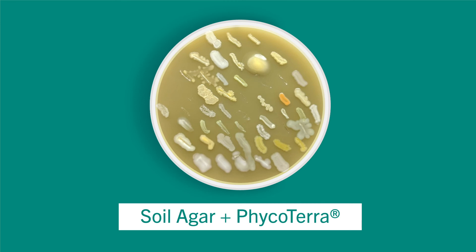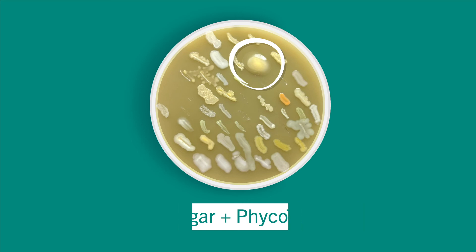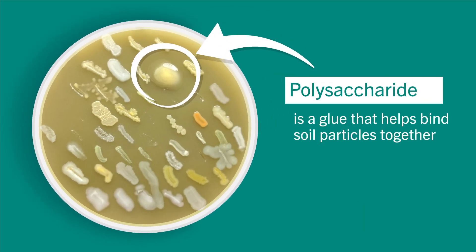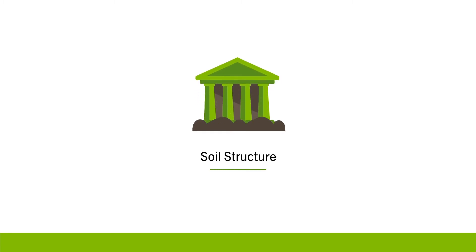One thing to notice is the appearance of this egg-yolk-looking substance in the top center. That is a polysaccharide — a glue that helps bind your soil particles together. So when you get a really optimal bacteria community in the soil, you can get these glues being secreted, which can help stitch your soil back together. That's one way microbes help promote soil structure.